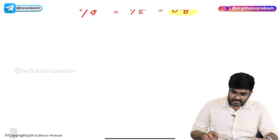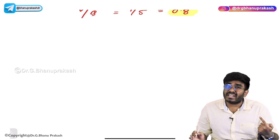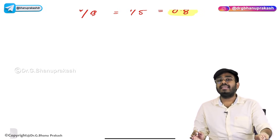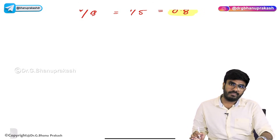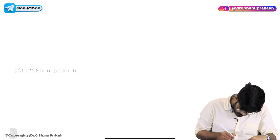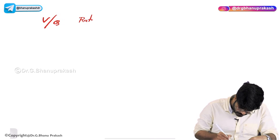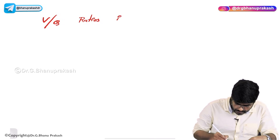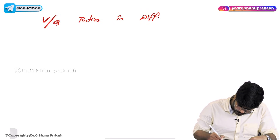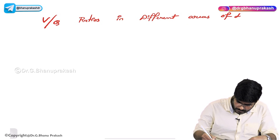In the middle lobe of the lungs it is 0.8, but the ventilation-perfusion ratio in the apex of the lung is different, and in the base of the lung it is also different. Now let's talk about the ventilation-perfusion ratio in different areas of the lung.